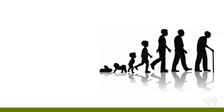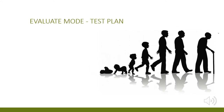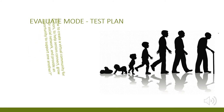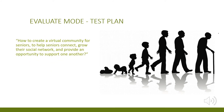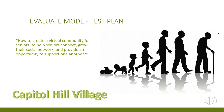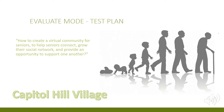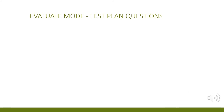The first step of our test plan was to explain to the test user the problem being solved: how to create a virtual community for seniors to help them connect, grow their social network, and provide an opportunity to support one another. We then showed them a clip of our source of inspiration, Capitol Hill Villages — a program of people aging in place who want to help one another. We then developed a series of questions to spur dialogue and allow for candid feedback to flow.